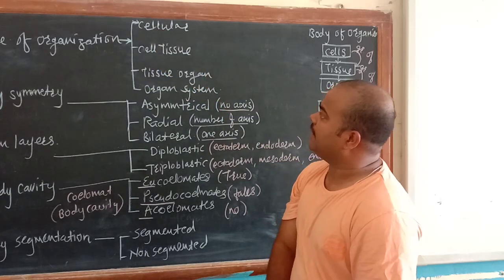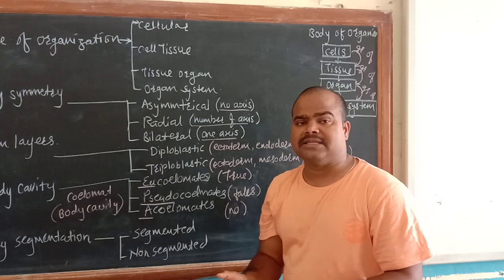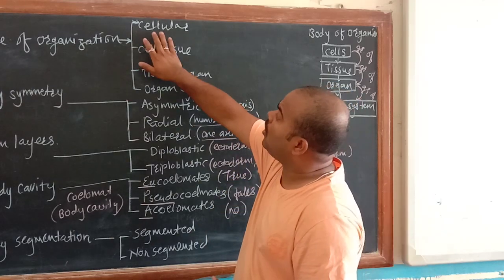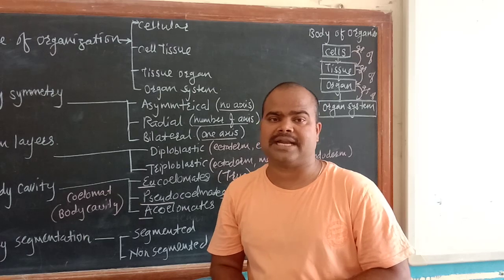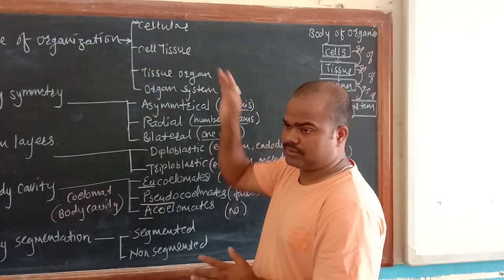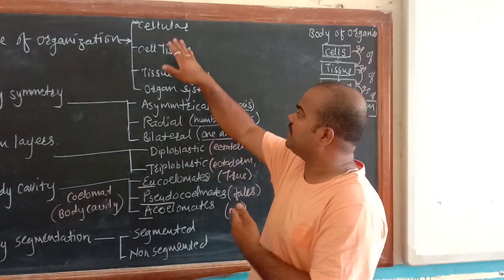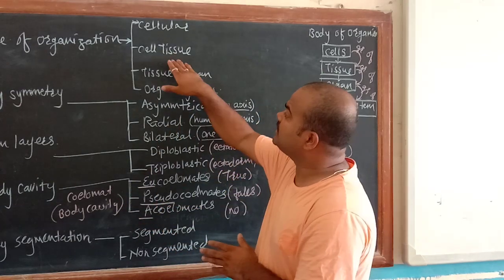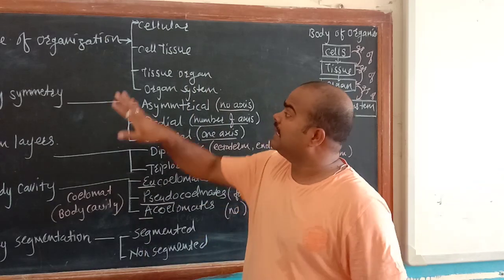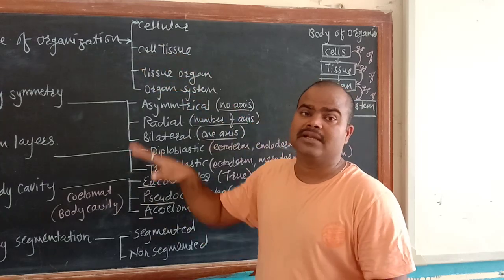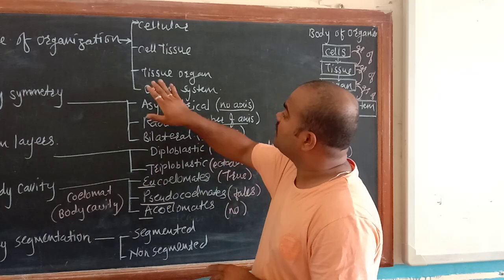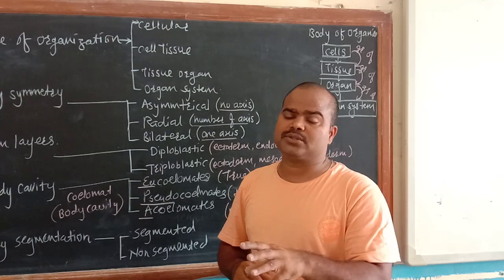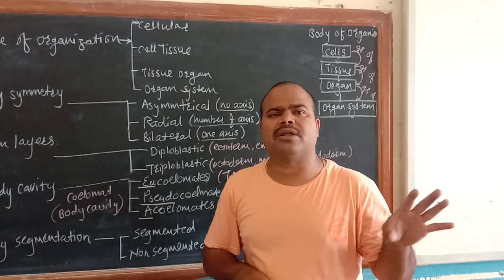The first criteria is cellular - organisms showing a cell level, including all unicellular organisms. Second is cell-tissue organization - a group of cells forming tissue, but this tissue is not designated for any particular function; it performs all functions of that organism. Third is tissue-organ - tissues are formed and organized for a particular function only.